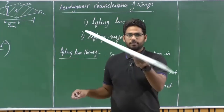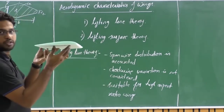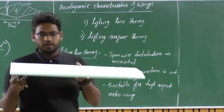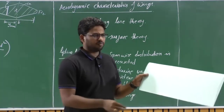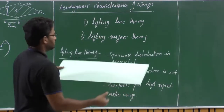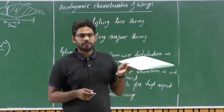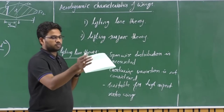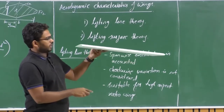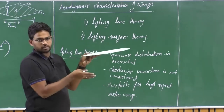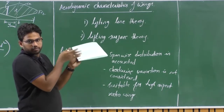Let us consider this wing made out of styrofoam. You can see the cross-section is an aerofoil — it is approximately 0.75 meters, a rectangular wing. Now, what will be the major difference in lifting characteristics from an aerofoil to a wing? Similar to an aerofoil, there will be a pressure distribution on the wing as well.